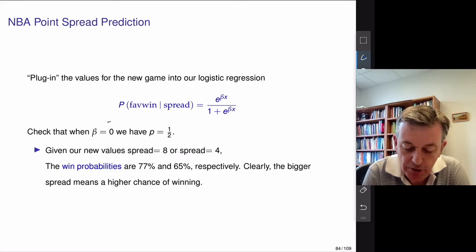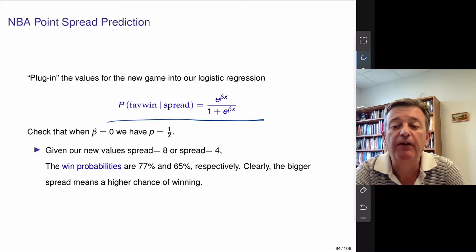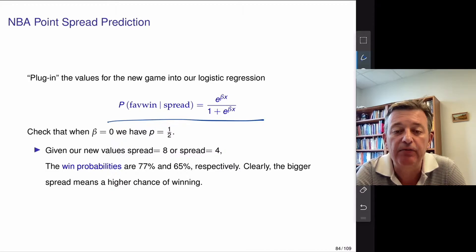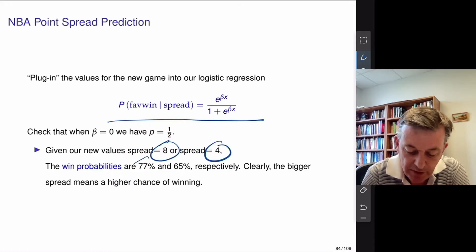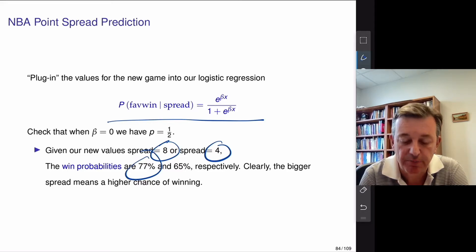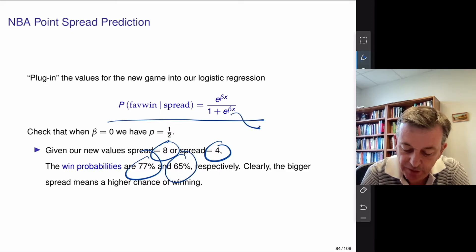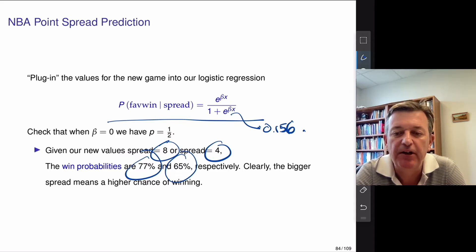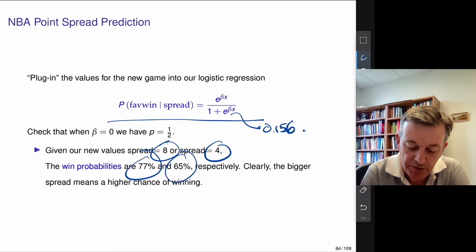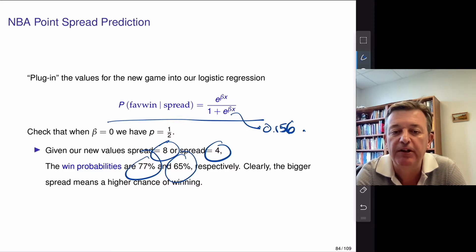So if I go back to my logit model, the probability of the favorite winning given the point spread is e to the beta x over 1 plus e to the beta x. So for example, if I plug in 8 or a 4, if I see a pretty heavy favorite, the win probability there is 77% and the win probability here is only 65%. And again, I'm just plugging in for my beta at the 0.156. And so it's sort of the obvious fact, but clearly the biggest spread means a higher chance of winning. But what's nice with the logistic regression is I can actually put probabilistic numbers to those as well.